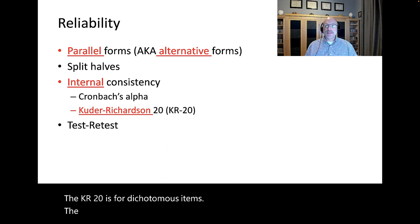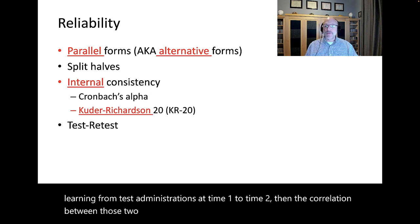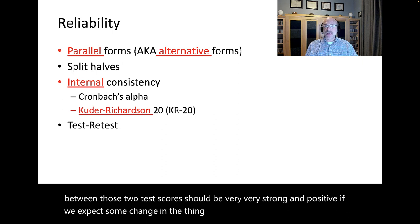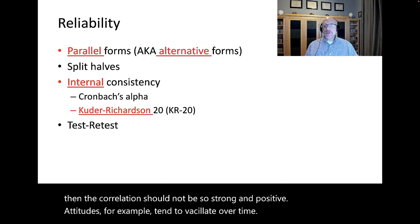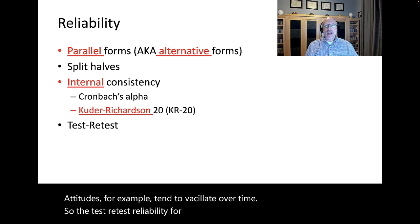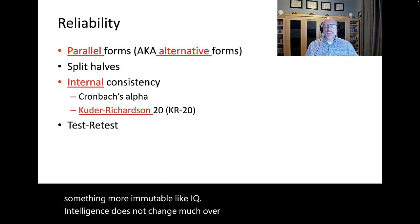The fourth type of reliability is test-retest reliability. If we expect that no learning from test administrations at time 1 to time 2, then the correlation between those two test scores should be very, very strong and positive. If we expect some change in the thing being measured over that time span, then the correlation should not be so strong and positive. Attitudes tend to vacillate over time, so the test-retest reliability for attitudes tends not to be so strong as something more immutable like IQ.